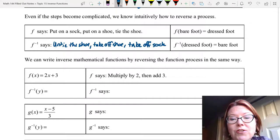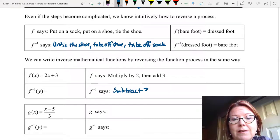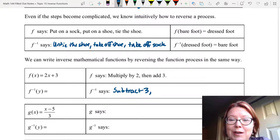To reverse that, we would first undo the add 3. So we would first subtract 3. Then we would undo multiply by 2. So we would divide by 2.